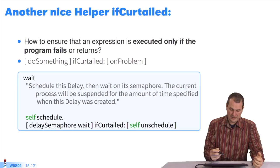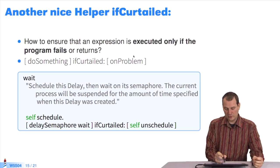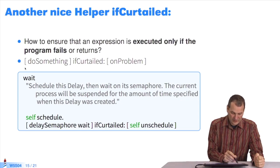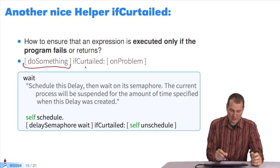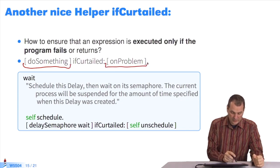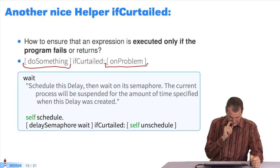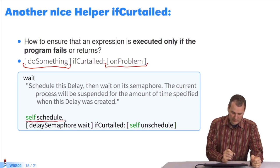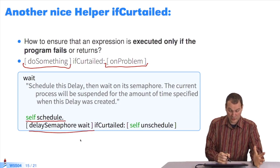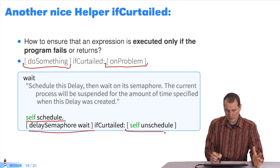There's another helper which is really nice: how can I ensure an expression is executed only if the program fails? With ifCurtailed, you do something, and if ever something strange happens, you execute this code. Here I've taken an example in Wait, which is very low level and allows you to change the processor scheduling. I say schedule a semaphore, do an operation, and if ever something doesn't work, the system guarantees that I'll remove it from the scheduler.